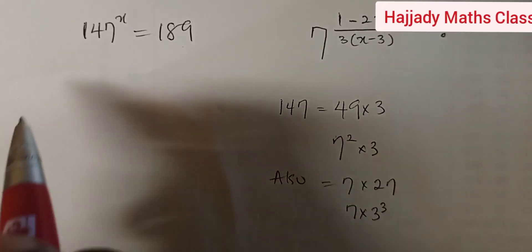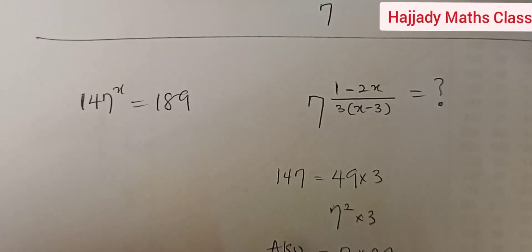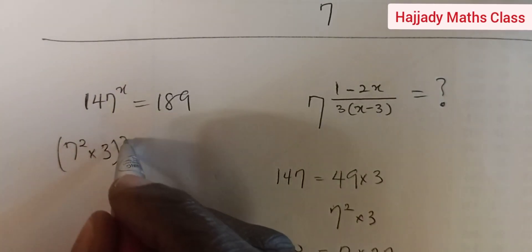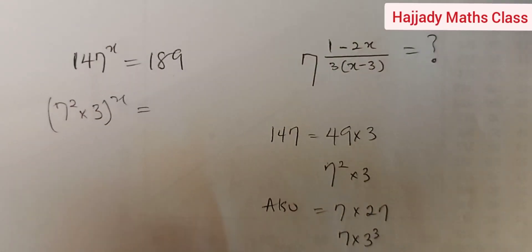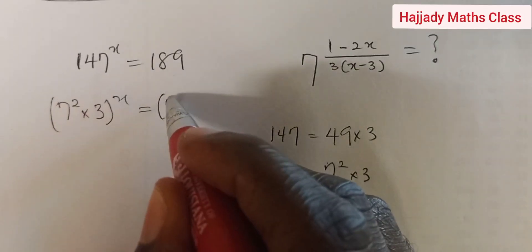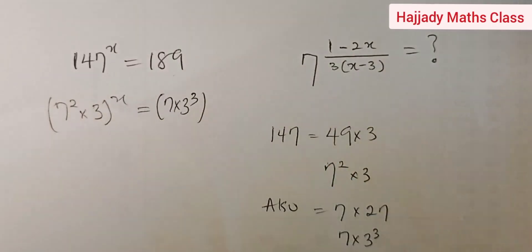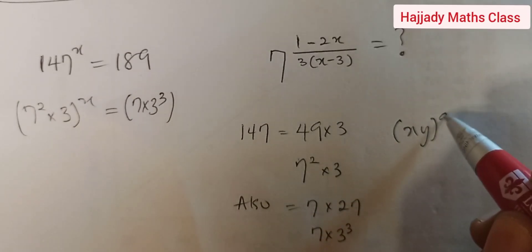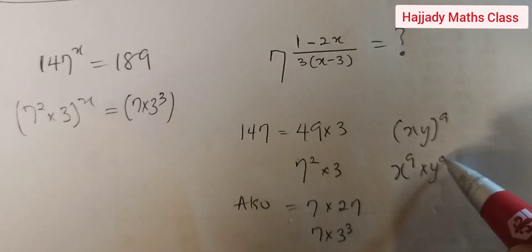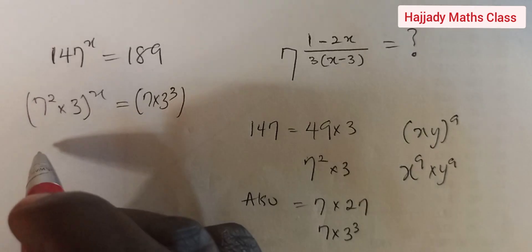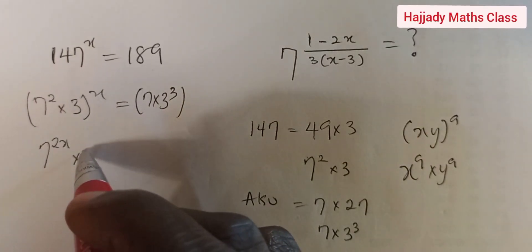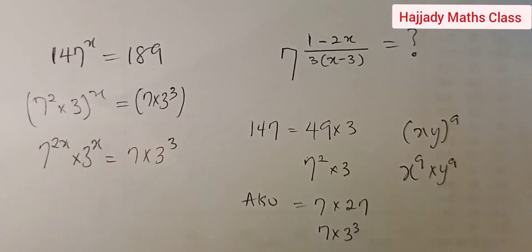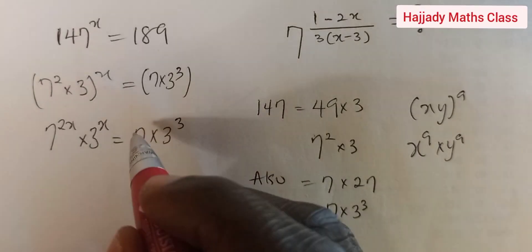Having known this, we come back and rewrite: 147 becomes 7 raised to power 2, multiplied by 3, all raised to power x, equals 189 written as 7 multiplied by 3 raised to power 3. From the rule of indices, x·y raised to power a equals x raised to power a multiplied by y raised to power a. Adopting this method, we get 7 raised to power 2x multiplied by 3 raised to power x, equal to 7 multiplied by 3 raised to power 3.